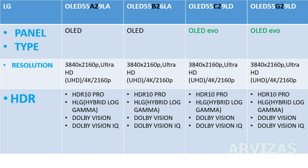HDR: HDR10 Pro and Hybrid Log Gamma are the same across all four models. Dolby Vision and Dolby Vision IQ are included, but budget and nano models don't have Dolby Vision. In recent years, better specifications have moved to the pricier TV models.